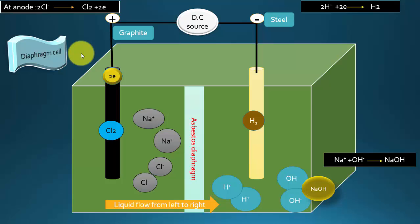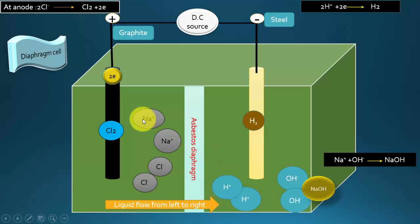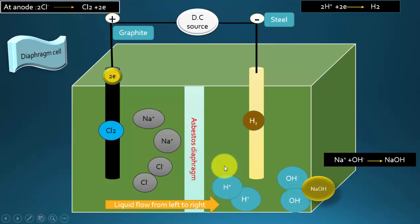Here you can see the diagram of a diaphragm cell. This is the anode, which is made of graphite. This is the cathode, which is made of steel. This is the sodium chloride solution — we call it brine. This is the asbestos diaphragm. The asbestos diaphragm allows sodium ions to pass from one compartment to the other. This flow occurs because liquid is allowed to flow from the left side to the right side, carrying sodium ions across, but not in the reverse direction. In this way, most of the sodium hydroxide accumulates in the right compartment.